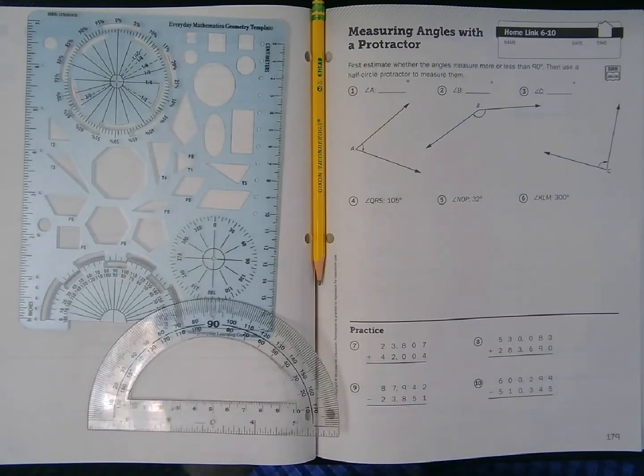Well, hi boys and girls, it's Mr. Wassman, and today we are going to be using a protractor to help us measure and then later draw some angles. I'm in my home length on page 179, that's Unit 6, Lesson 10, Measuring Angles with a Protractor.